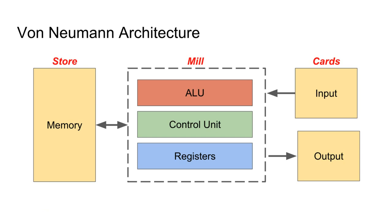It's worth noting that while von Neumann came up with his model independently, he was effectively rediscovering the same model Babbage and Lovelace used. What von Neumann called the CPU was effectively the same as the 'mill' in Babbage's machine; what von Neumann called memory was the same as Babbage's 'store'; and input via paper tape or punch cards was still referred to as 'cards' by Babbage.